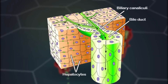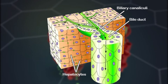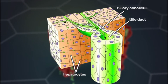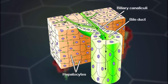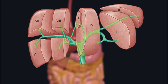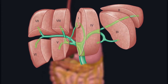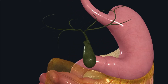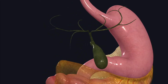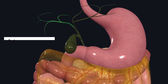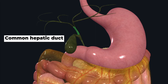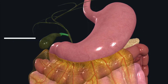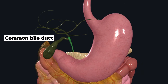We also have hepatocytes in the hepatic lobule, which secrete bile juice into the biliary canaliculi. The biliary canaliculi drain this secretion into the bile duct. Each segment has a duct associated with it — numerous bile ducts drain into the segmental duct of that particular segment, and all segmental ducts converge to form the right and left hepatic ducts. These then form the common hepatic duct, which combines with the cystic duct from the gallbladder to form the common bile duct.